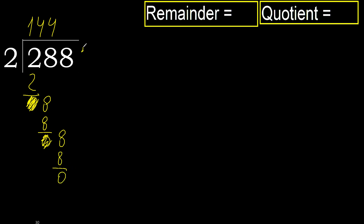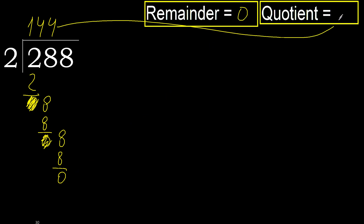Next, there is no number, therefore finish. 288 divided by 2 is 144.